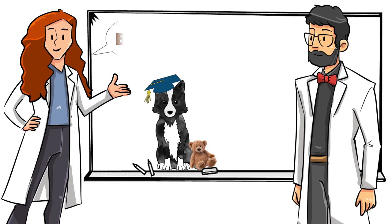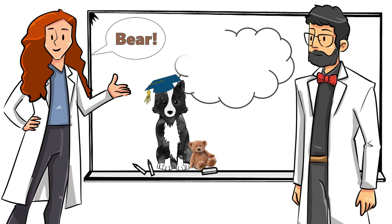The gifted dogs were able to retrieve the named toys upon hearing their owner's request, in the light and in the dark. This suggests that for the gifted dogs, hearing the name of a toy evokes a mental image that includes different senses.